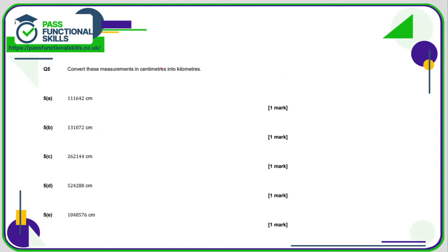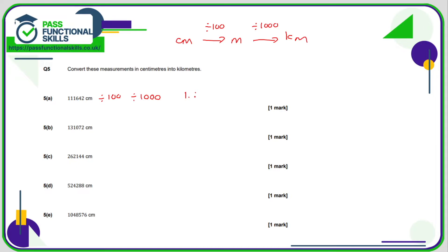For question number five, we're converting centimetres into kilometres. Luckily we can use a calculator. I would recommend converting the centimetres first into metres by dividing by 100, and then metres into kilometres by dividing by 1000. You should end up with the following answers: 1.11642, 1.31072, 2.62144, 5.24288, and 10.48576.